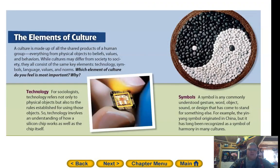The elements of culture: culture is made up of shared products of the human group, everything from physical objects to beliefs, values, and behaviors. While cultures may differ from society to society, they all consist of the same key elements — technology, symbols, language, values, and norms.